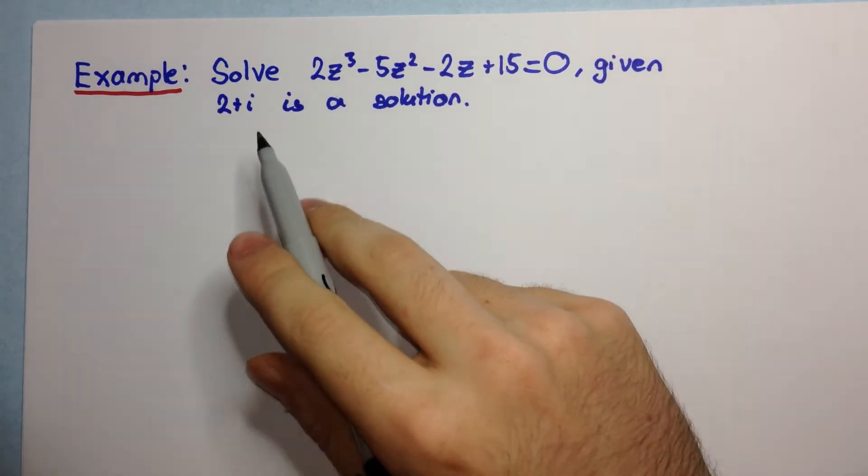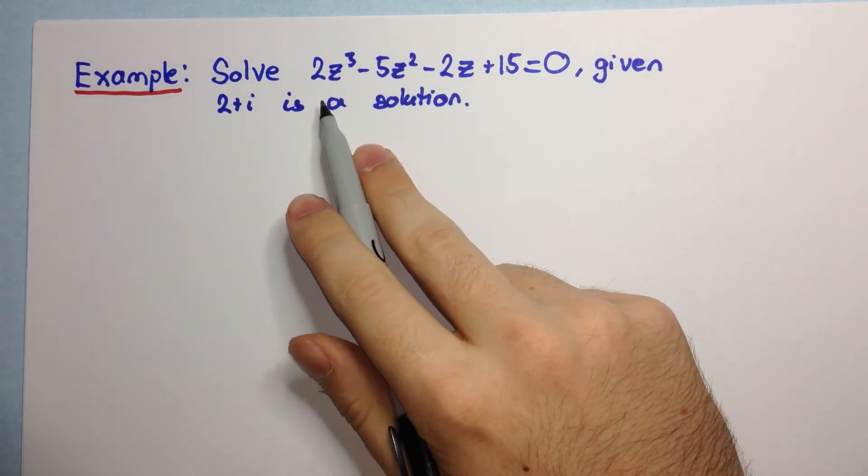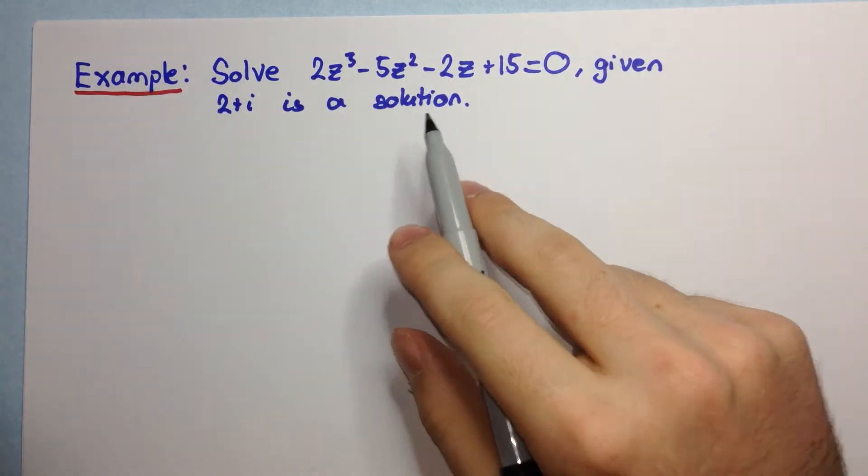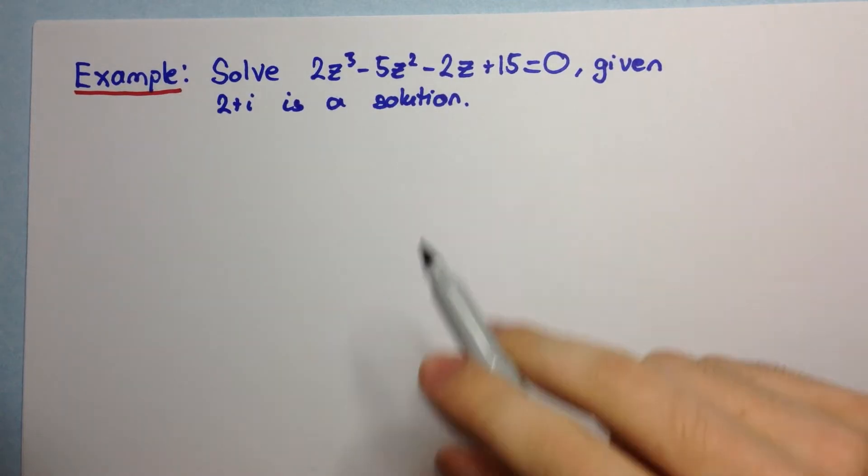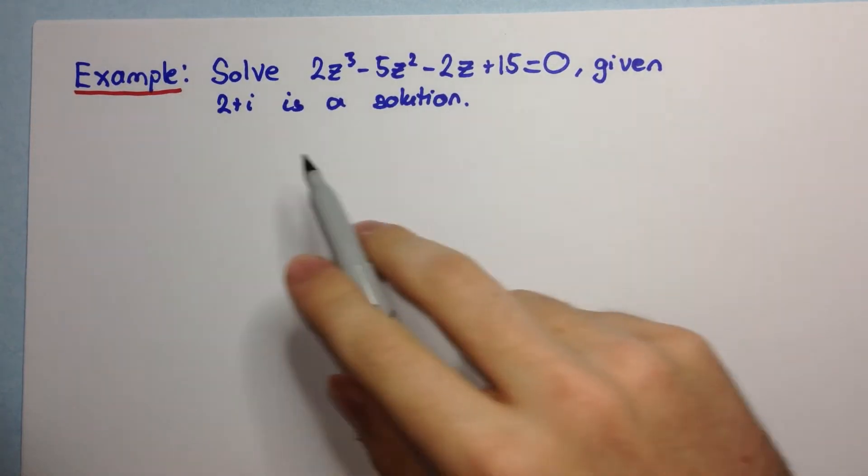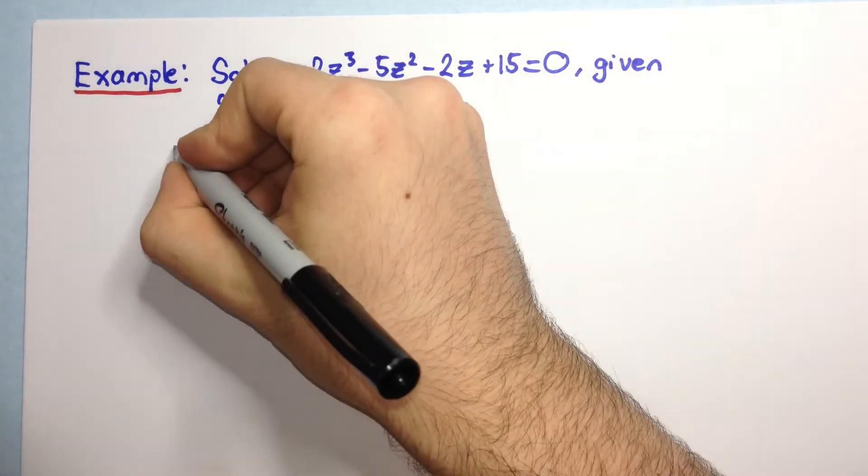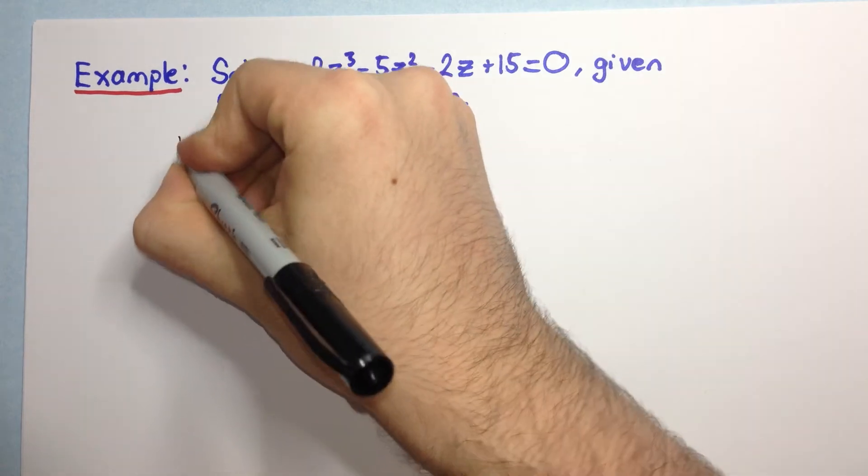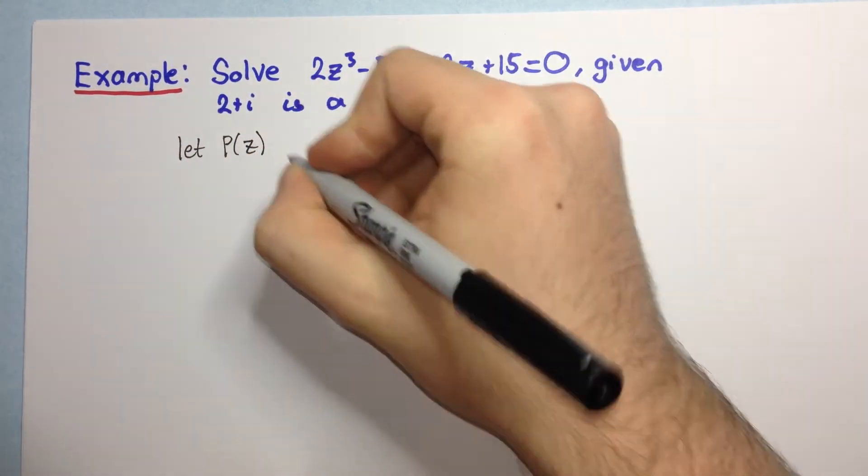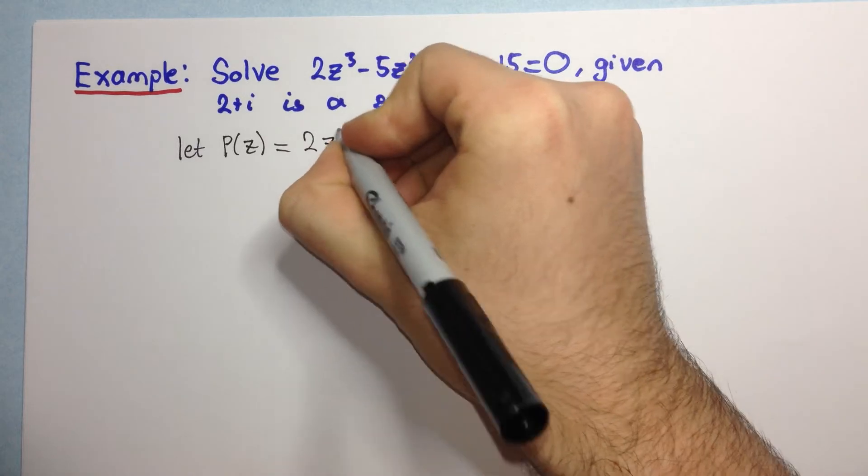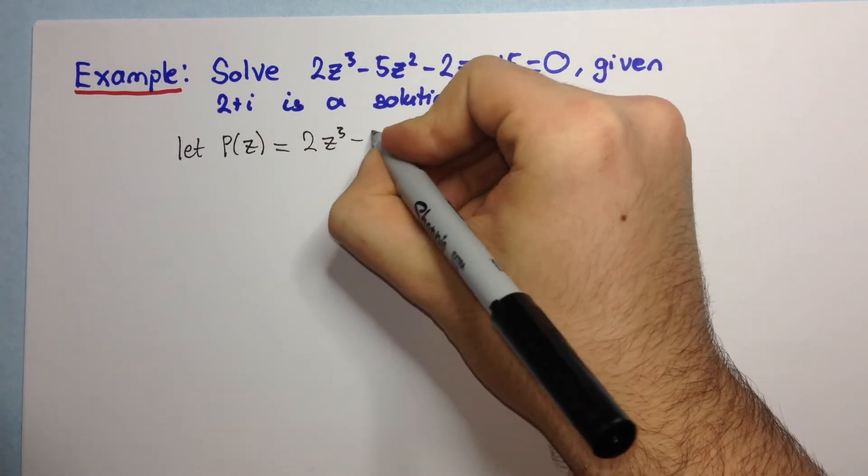So the question says solve 2 times z cubed minus 5z squared minus 2z plus 15 equals 0 given that 2 plus i is a solution. Okay, so the first step would be let p of z equal to that polynomial up here that we're trying to solve equal to 0.